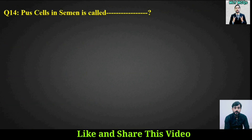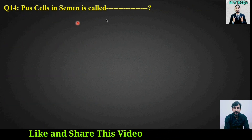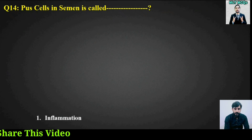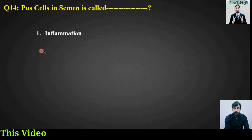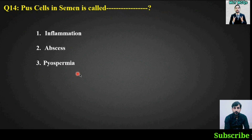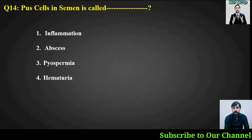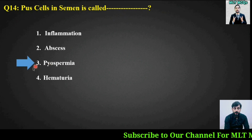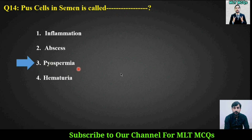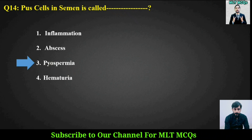MCQ number fourteen: Pus cells in semen is called what? Options are: inflammation, abscess, pyospermia, or hematuria. The right answer is option number three — pus cells in semen is called pyospermia.